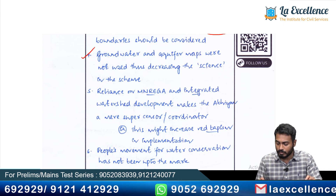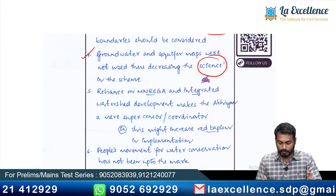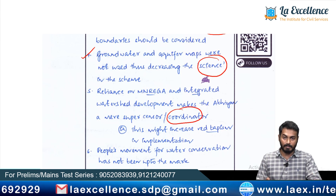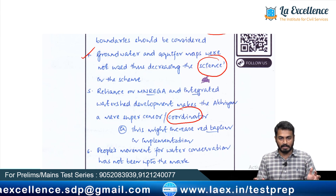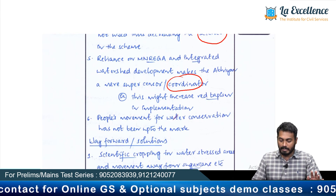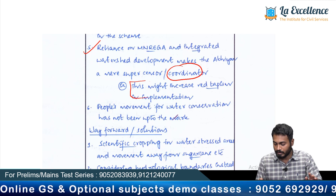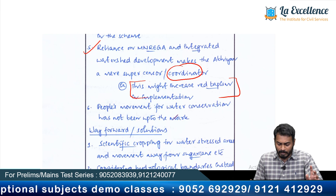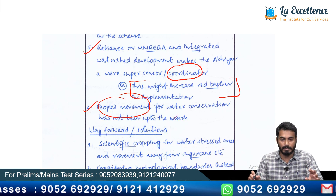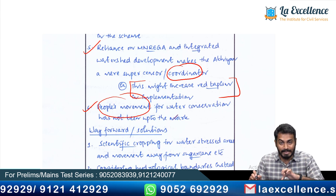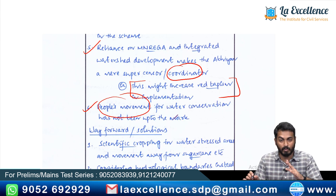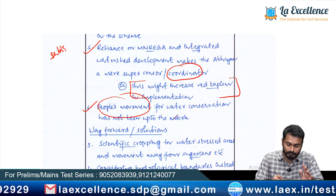Further, groundwater and aquifer maps were not used, thus decreasing the scientific rigor of the scheme. Also, over-reliance on MGNREGA and the Integrated Watershed Development Programme makes the Abhiyan merely a super-coordinator rather than an independent scheme with its own essence. There is also mention that people's movement for water conservation has not been up to the mark. Overall, he has written six points, of which four are solid and relevant — this part of the answer is satisfactory.